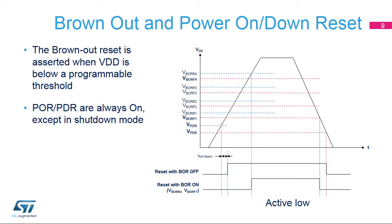The power resets BOR and POR reset all registers except those in the backup domain powered by VBAT, which contains the RTC and TAMP blocks and the external low-speed oscillator LSE. When exiting standby mode, all registers powered by the main regulator are reset. When exiting shutdown mode, a power reset is generated.